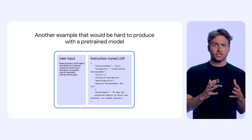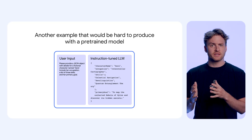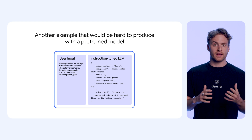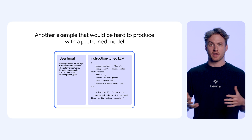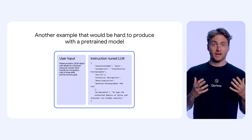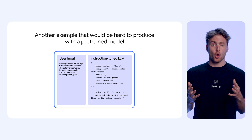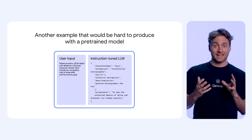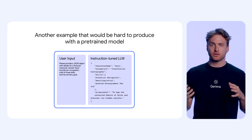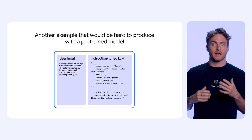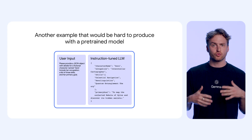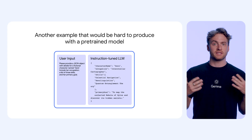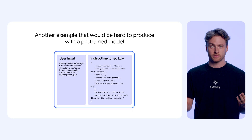We teach it how to reason and answer in ambiguous situations where several answers are plausible. It is trained to follow a wide set of instructions and format its answers in particular ways, like creating a JSON output, writing in different languages, or sticking to a certain paragraph count.